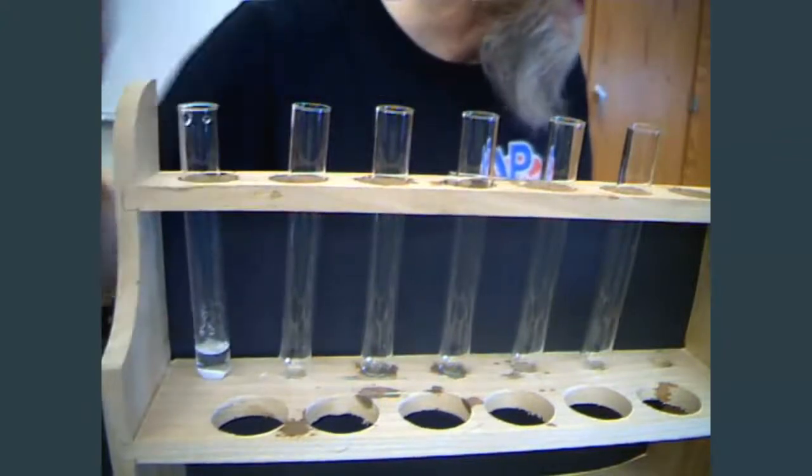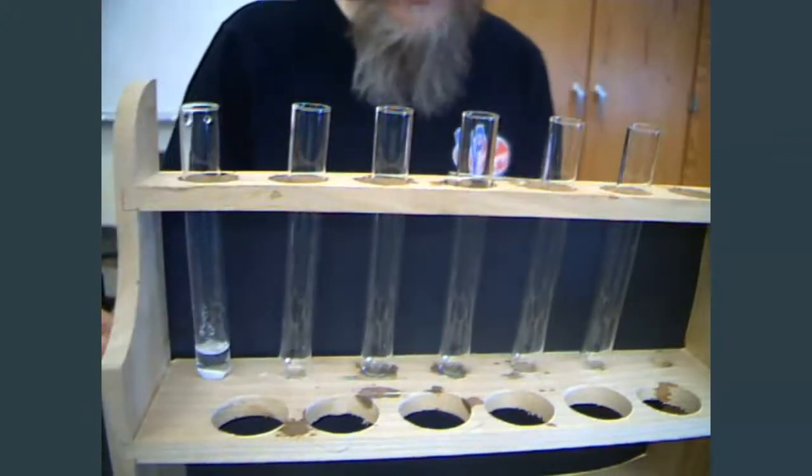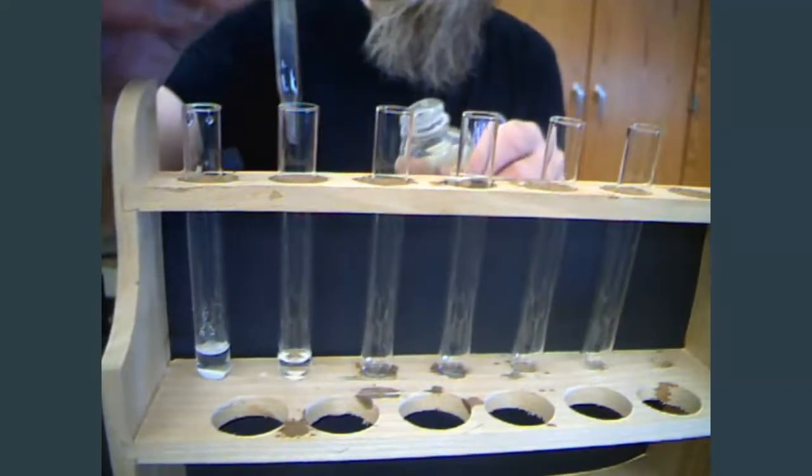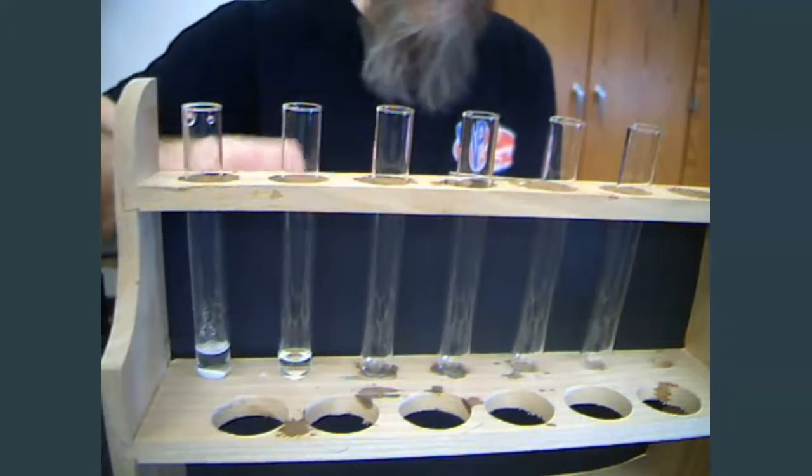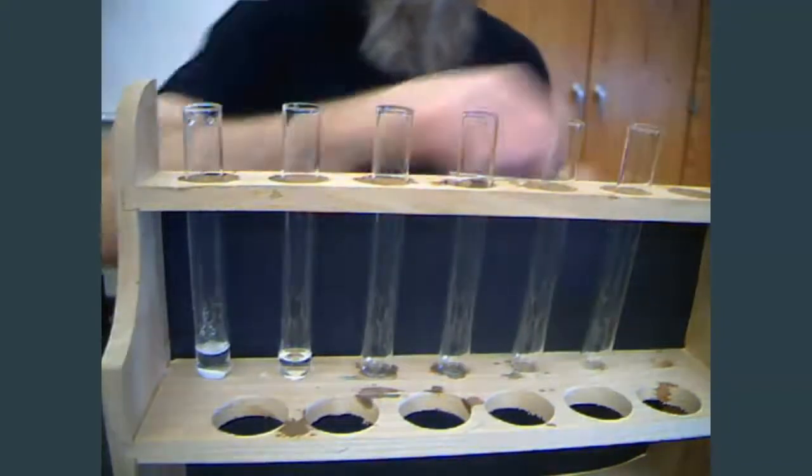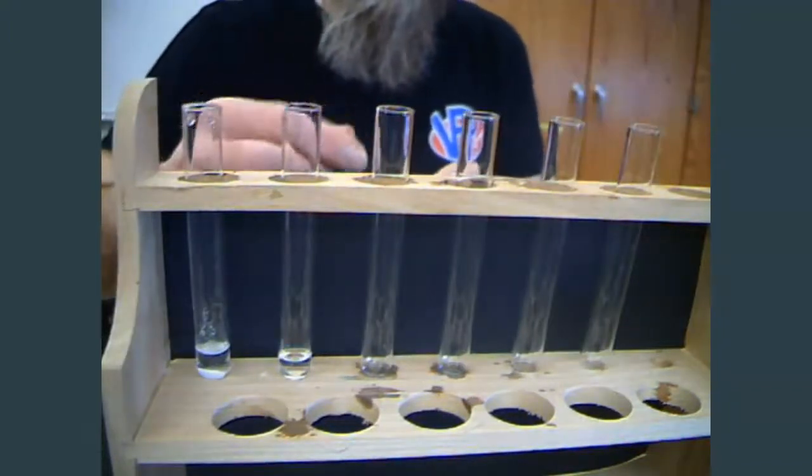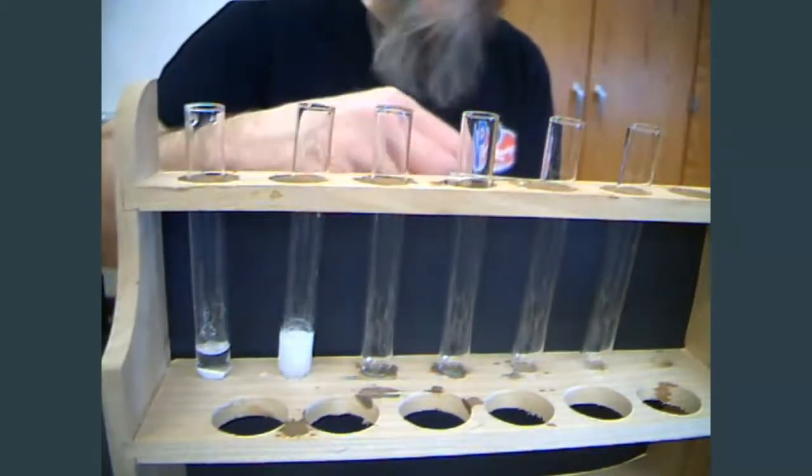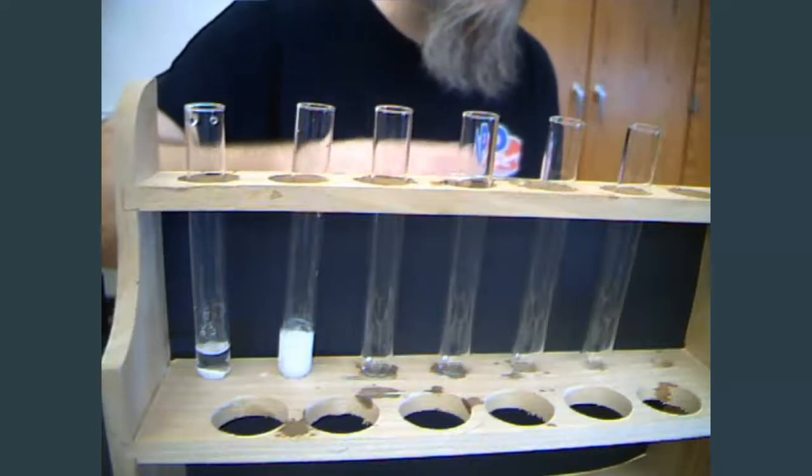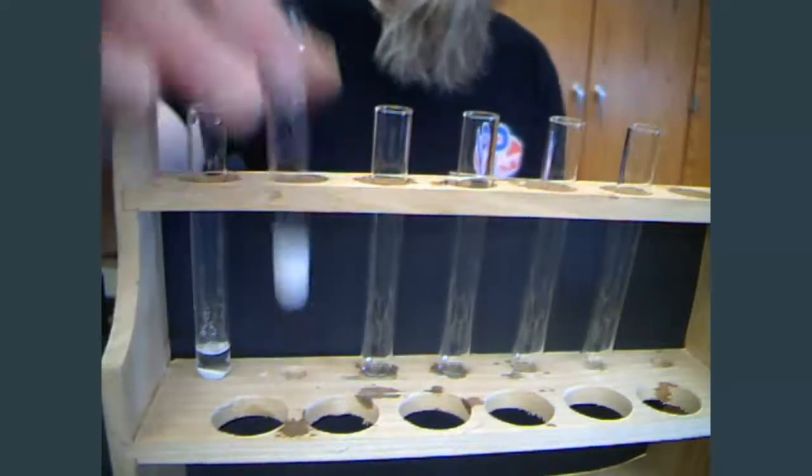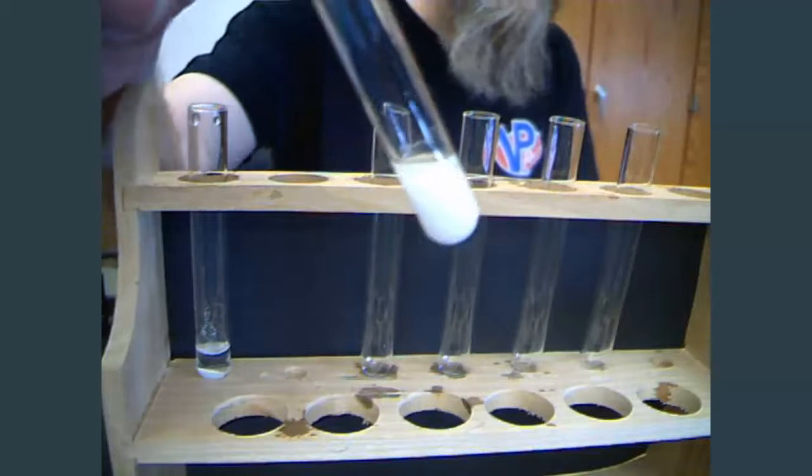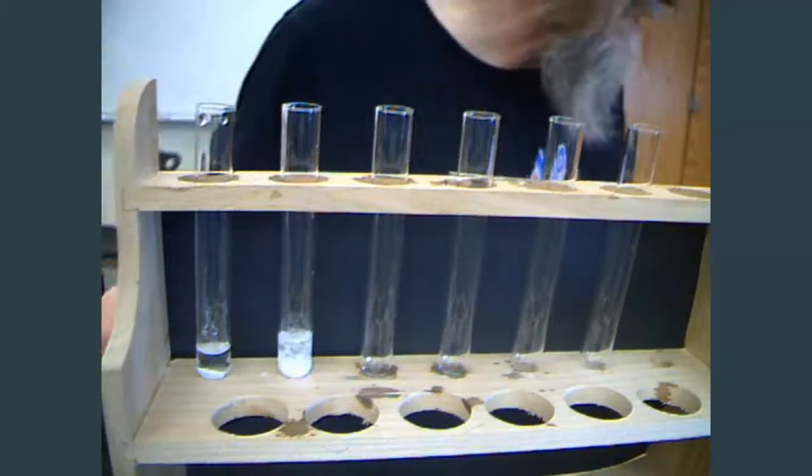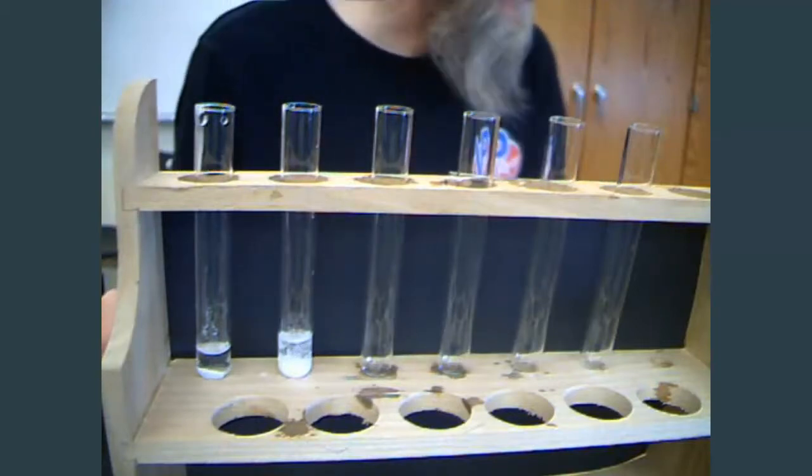On to number 16. Hydrochloric acid and lead nitrate. Put our lead nitrate in and our hydrochloric acid. This one again I'm going to use a little bit extra because sometimes this one is a really fine precipitate. And if you only use one or two drops, sometimes you miss it. So I put a little extra in there and we can definitely see that there is a reaction for number 16 between hydrochloric acid and lead nitrate.